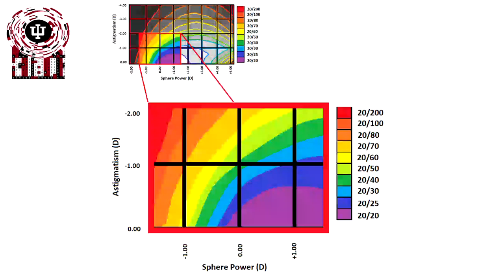The worst case scenario is somebody comes in seeing 20/200, they've lost their glasses, and you have to refract with nothing, which is not the objective. But if you know within this area, you can predict based upon their spectacle prescription and their acuities fairly accurately what their acuity will be and what their prescription will be.